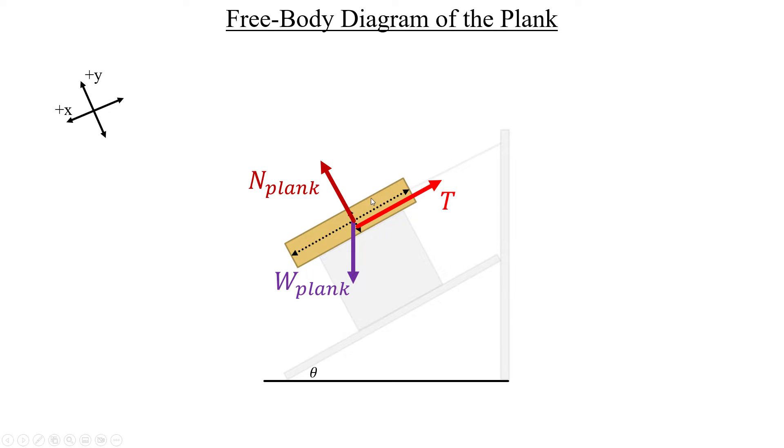Remember, the plank doesn't move at all, though. It's the block that moves underneath it, down this inclined plane. So, that means that the frictional force acting on the plank is still going to be opposite the block's motion, in the negative x-direction, like this.